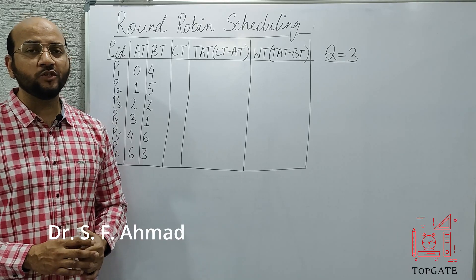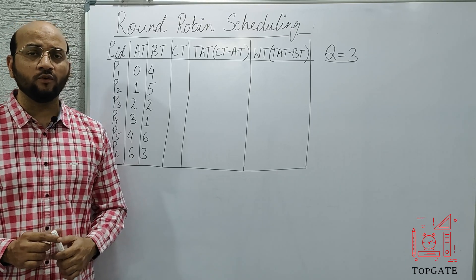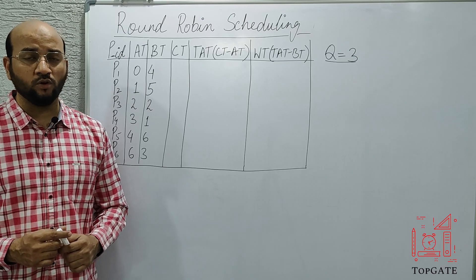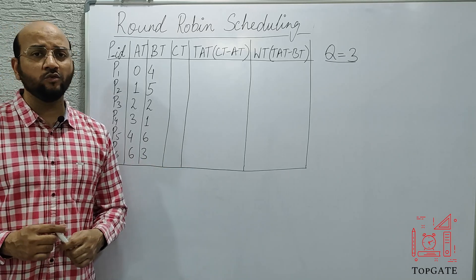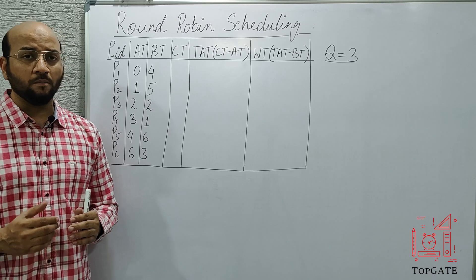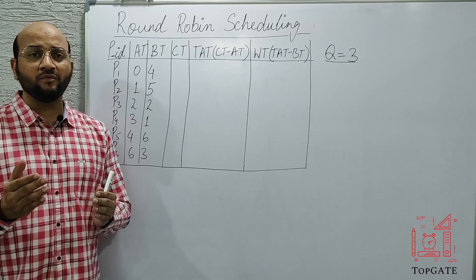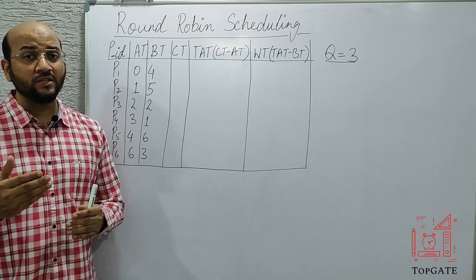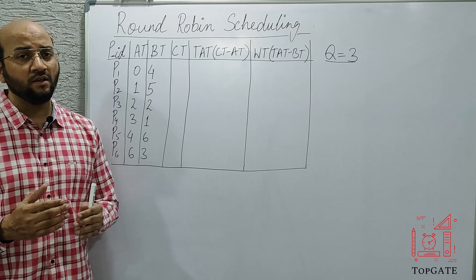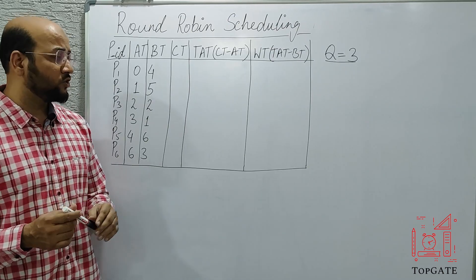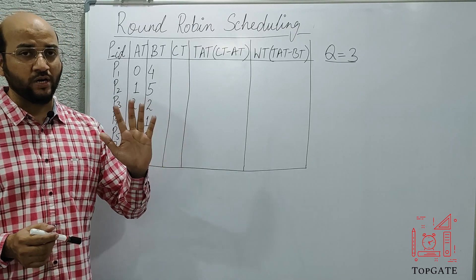Welcome to the channel Top Gate. In this video I'll discuss one more example of the Round Robin scheduling algorithm. In the previous lecture we already saw what Round Robin scheduling is and how to solve questions based on it. Before making the Gantt chart we must make a ready queue, because with the help of the ready queue we can make the Gantt chart very easily and the chances of error are negligible. It's always advisable to first make the ready queue and then make the Gantt chart.